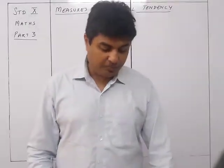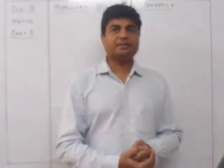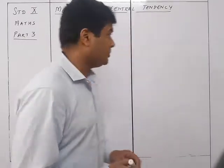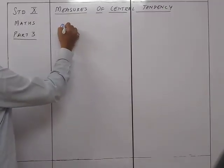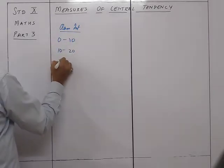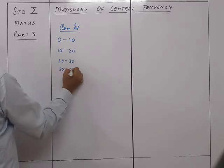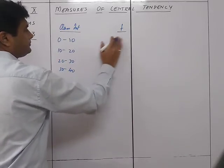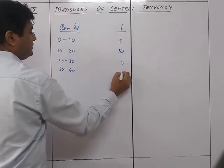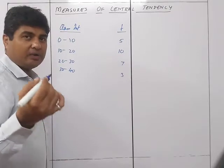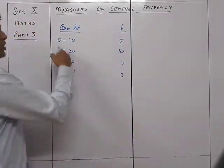We now continue with exercise 24b. The only difference here is that the data given is grouped data. In grouped data, you have a class interval like 0 to 10, 10 to 20, 20 to 30, 30 to 40, with corresponding frequencies like 5, 5, 10, 7, 3. The frequency F is the same as before, but here we do not have an x directly.